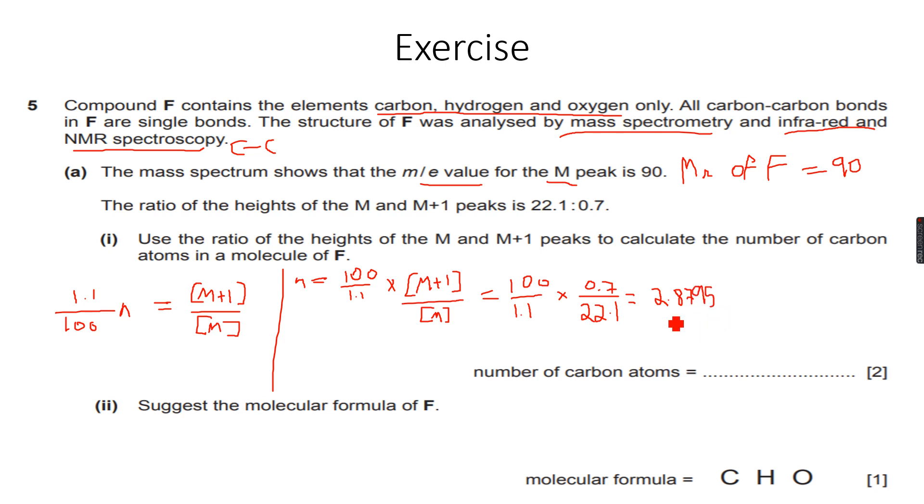So we get this. We obviously know this cannot be the number of carbon atoms, 2.8, so we'll round it off. So again, 100 divided by 1.1 into 0.7 divided by 22.1, so we get 2.8795, which is rounded off to 3. Because we take the nearest whole number, so we have 3 carbon atoms in the molecule. Now, we know that from the given information that...